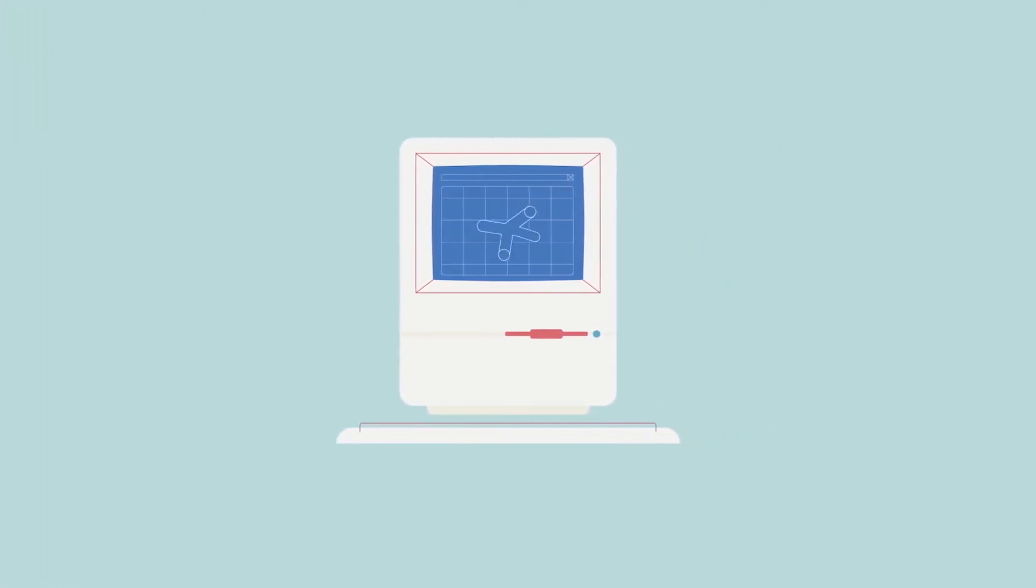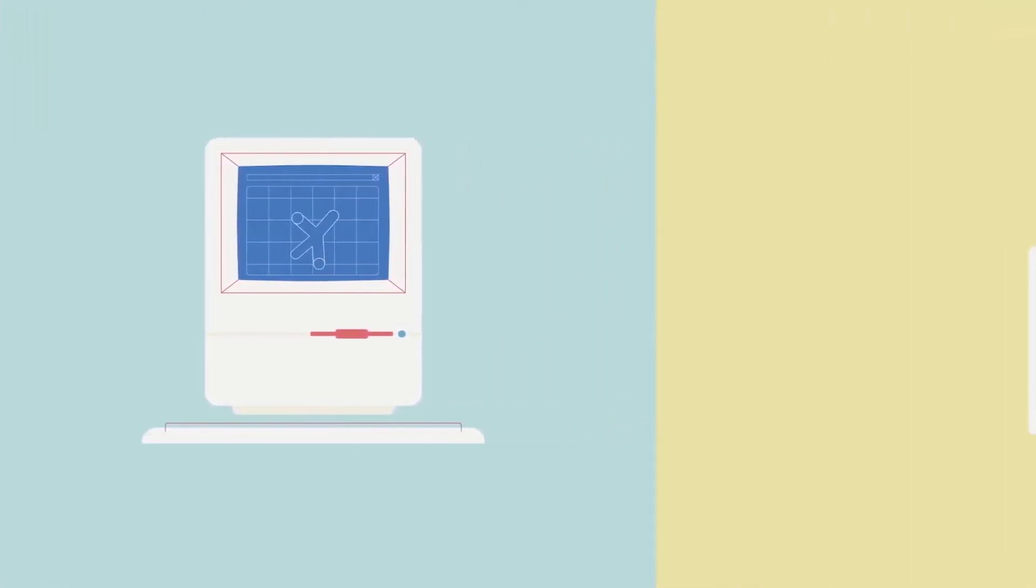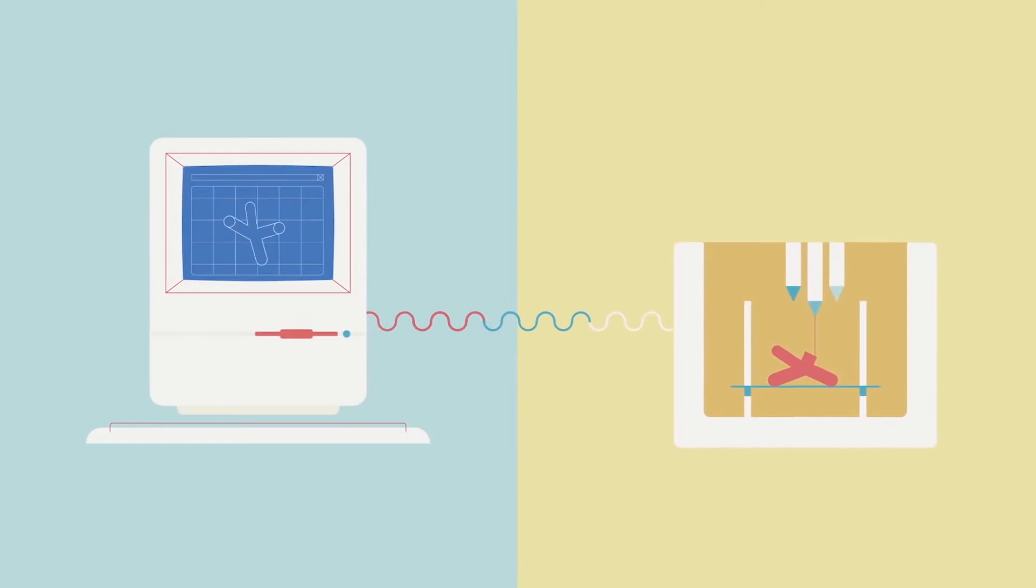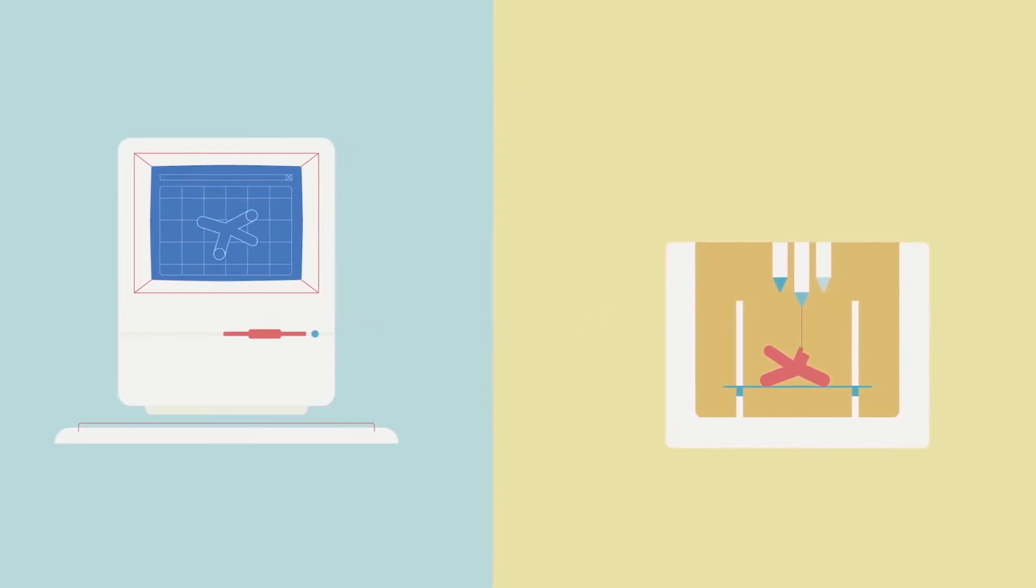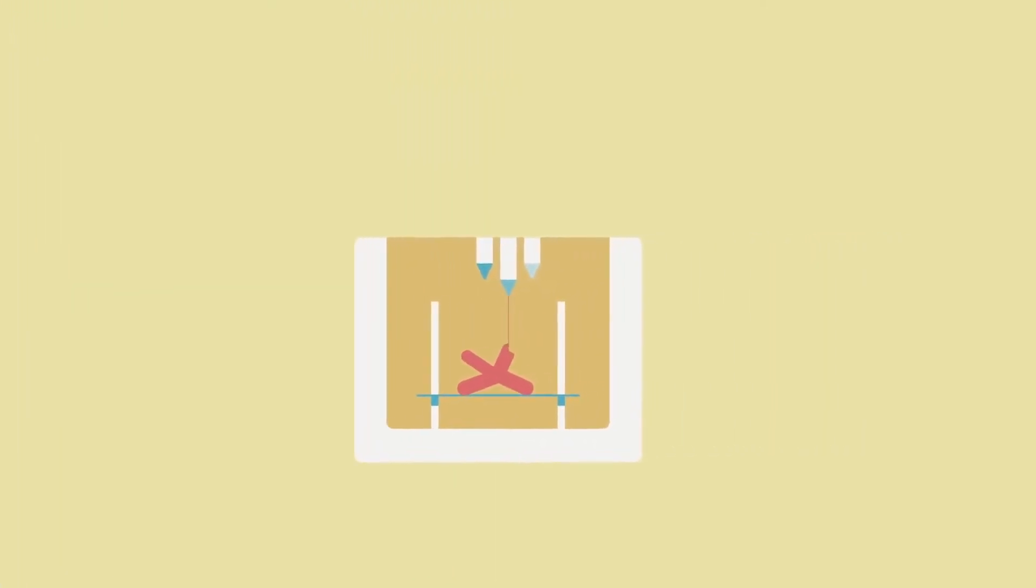We're not able to print complex organs just yet, but simpler tissues, including blood vessels and tubes responsible for nutrient and waste exchange, are already in our grasp.